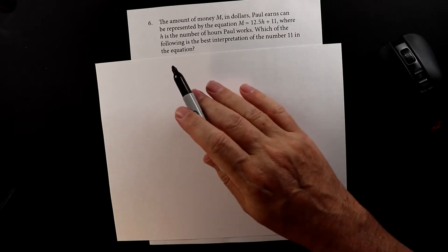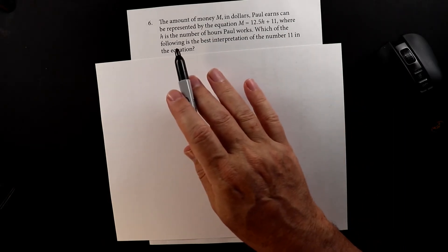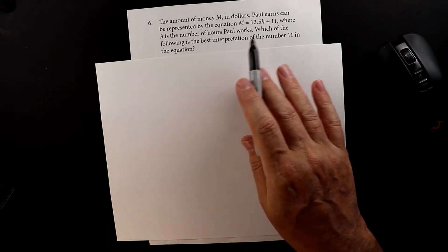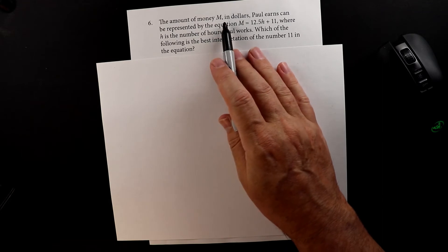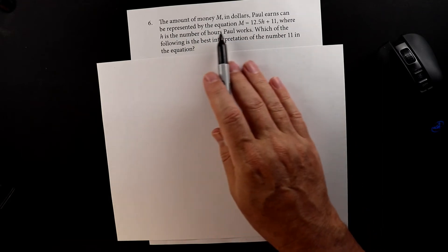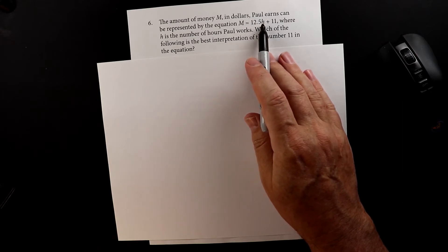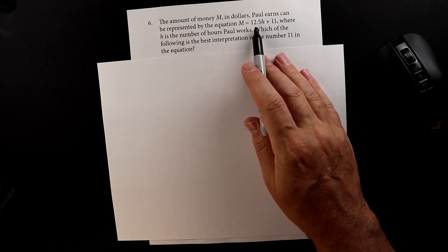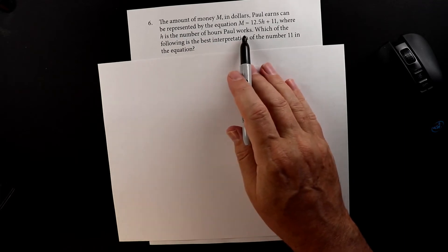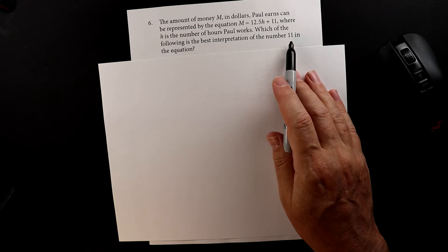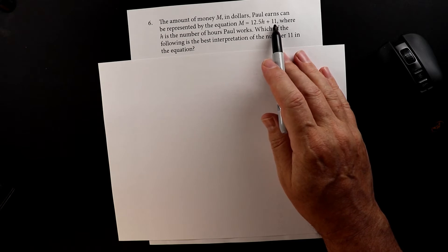This is number six for the second test and it's a word problem. The nice thing about this is you're not actually doing any math — you're just trying to figure out how the equation is set up. The amount of money m in dollars Paul earns can be represented by the equation m equals 12.5h plus 11, where h is the number of hours Paul works. We just have to figure out what the number 11 represents.